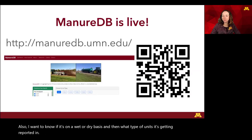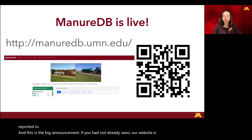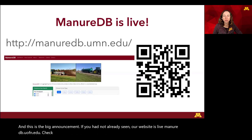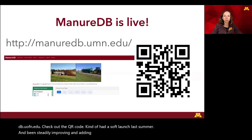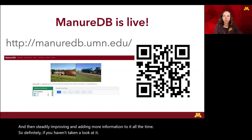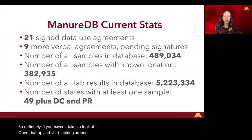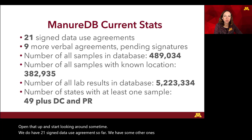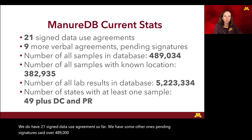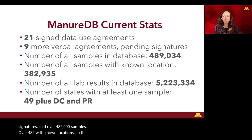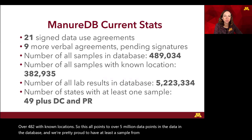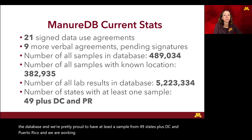This is the big announcement: our website is live at manuredb.umn.edu — check out the QR code. We had a soft launch last summer and have been steadily improving and adding more information all the time. We have 21 signed data use agreements so far with some others pending. We have over 489,000 samples and over 482 known locations, pointing to over 5 million data points in the database. We're proud to have at least a sample from 49 states, plus DC and Puerto Rico, and we are working on Alaska — maybe soon.